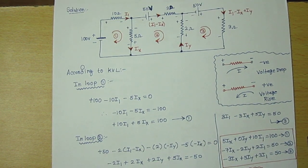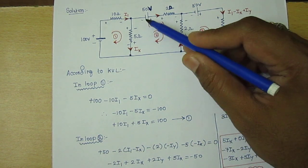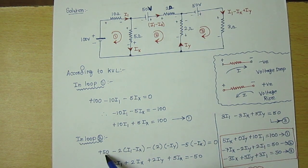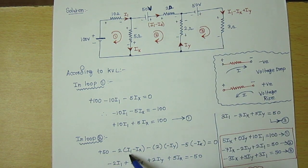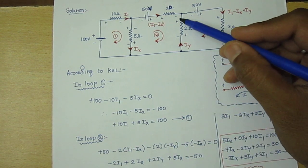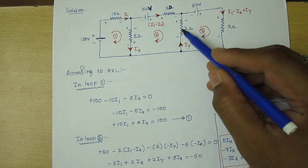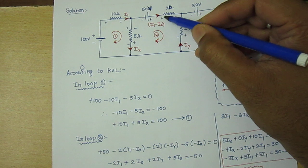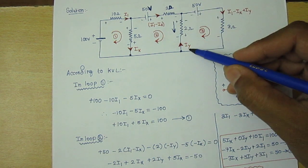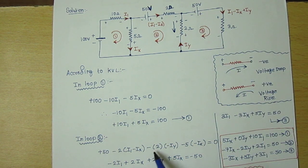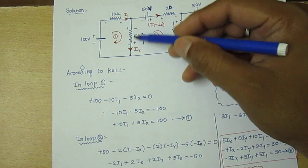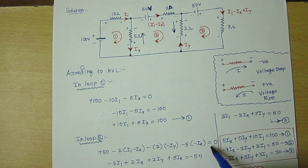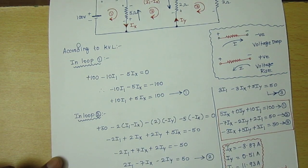For loop 2, moving in the clockwise direction from lower to higher value: +50. Then from higher to lower value: −2(I1 − Ix). Here the current flowing is I1 minus Ix. Moving further: −2(−Iy), because the current Iy given in the question flows in the opposite direction. And here −Ix applies because Ix also flows opposite to the loop direction. So −Ix = 0. Simplifying: 2I1 − 7Ix − 2Iy = 50. This is equation 2.